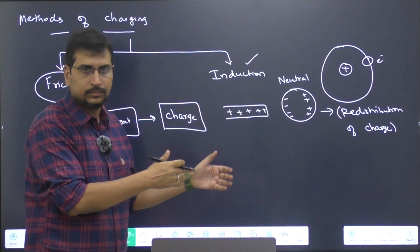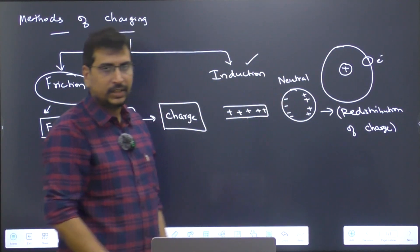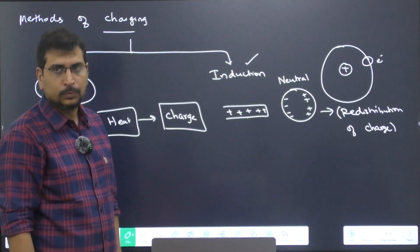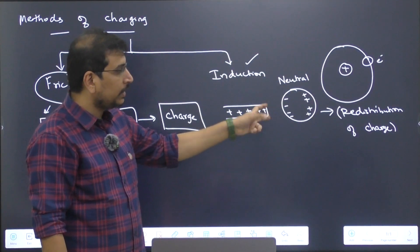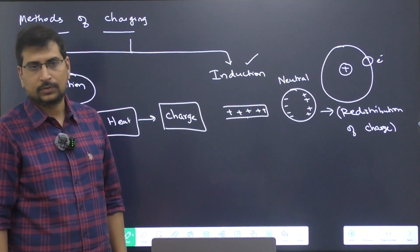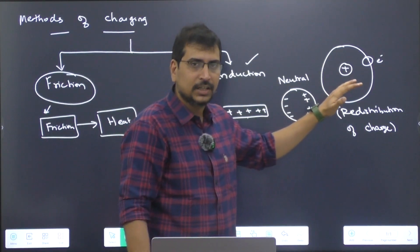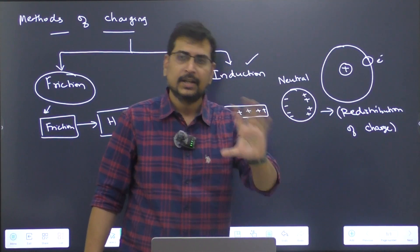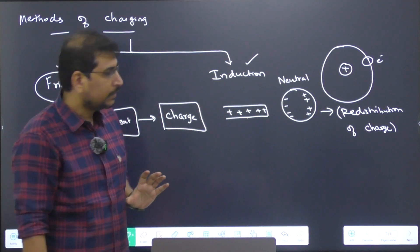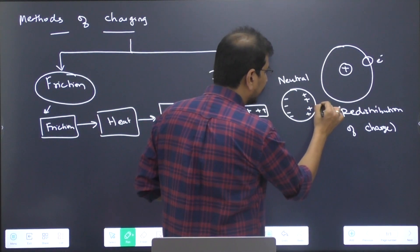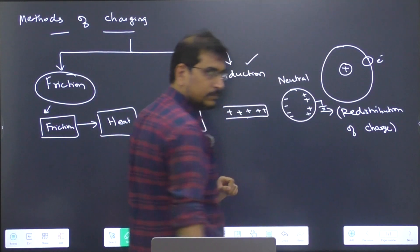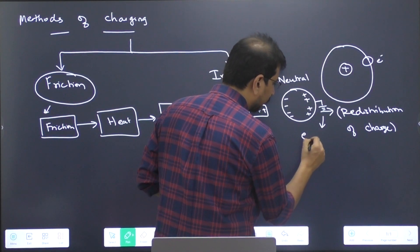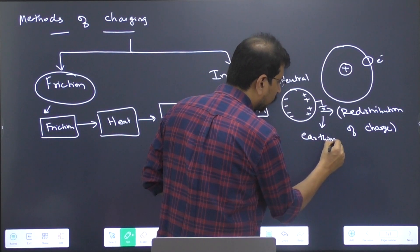To make this material get charged, what am I supposed to do? I need to make either of the charges get lost. I need to either completely remove the negative charge or remove the positive charge so that I can call that object an isolated charge. For that, what we will do is you take this and connect it to the ground. You know this process - you call it grounding.